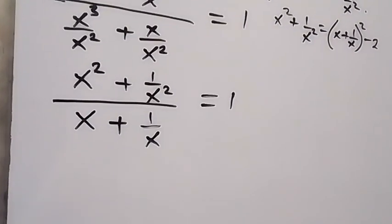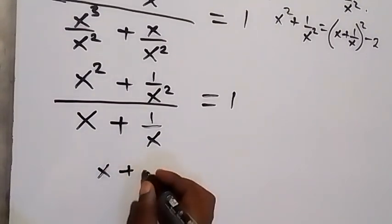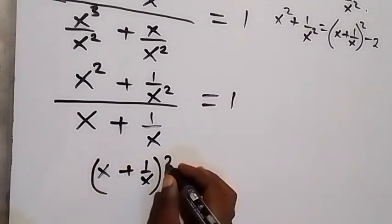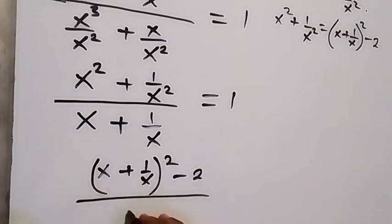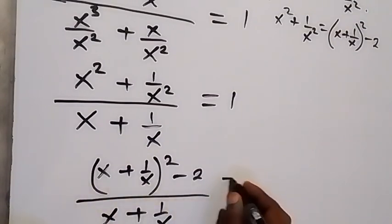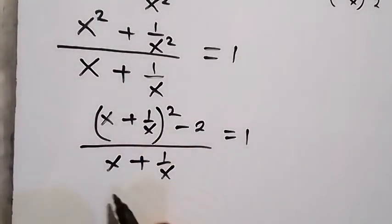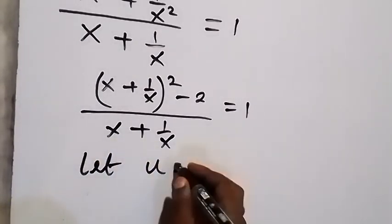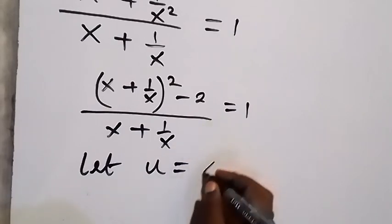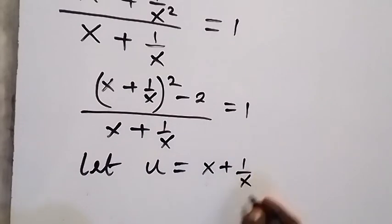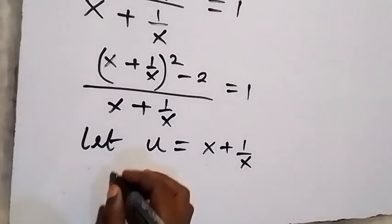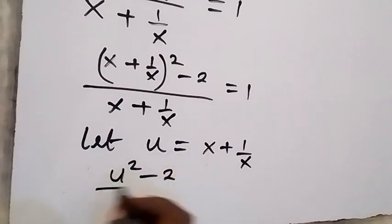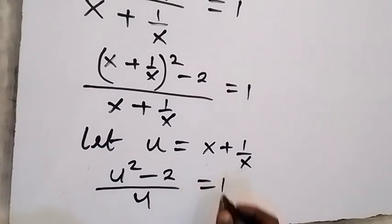This equation becomes: x plus 1 over x all squared, minus 2, over x plus 1 over x, equals 1. From here we have x plus 1 over x common, so we can use a letter to represent that. Let u equal x plus 1 over x. We write this equation again in terms of u so that we have u squared minus 2 over u equals 1.